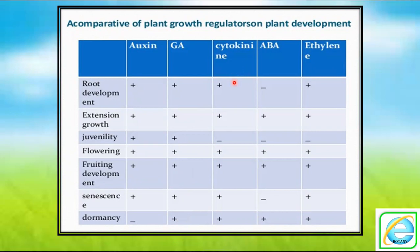Cytokinin — related to cell division — plays an important role in shoot and root development as well as extension of growth. Cell size and volume increase due to cytokinin. The juvenility phase is inhibited by cytokinin, while flowering phase, fruit development, senescence, and dormancy are promoted by cytokinin.